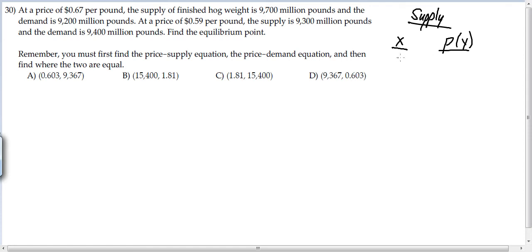The supply we really can't control. So we know that when that's 9,700, the price is 0.67. So again, supply is 9,700 million pounds. And then we also know that for the price of 0.59, we have a supply of 9,300. So now we'll go find slope for that.